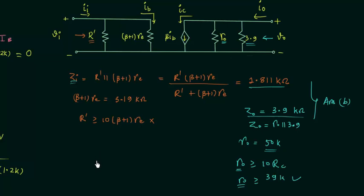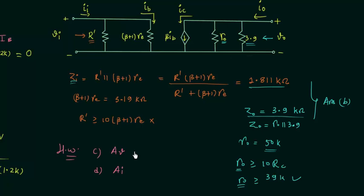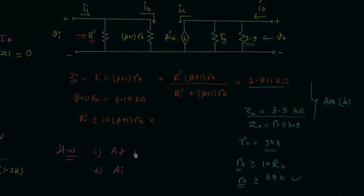Parts C and D are homework problems for you. In Part C you need to calculate the voltage gain, and in Part D you need to calculate the current gain. Once you have your answers, post them in the comment section. I will end this lecture here. See you in the next one.